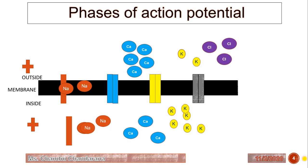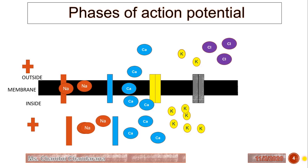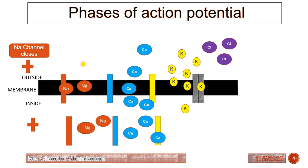After the L-type calcium channel opens and there is a slow influx of calcium ions, phase 1 begins. In phase 1, the sodium channel closes and becomes inactivated, while potassium channels open up, leading to slow efflux of potassium ions. This makes the inside more negative and outside more positive. The rate of potassium efflux equals the calcium influx, ultimately reaching phase 2, the plateau stage.